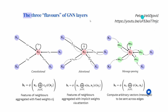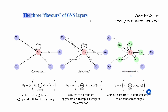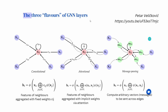Borrowing here from Petar Veličković, I show you the summary — the three flavors of our GNN layers that we have, and more or less you have three options. In the GCN, in our convolutional case, the features of our neighbors are aggregated with fixed weights — our C_ij edge weights. Attentional: the features of neighbors are aggregated with implicit weights via the attention mechanism. And message passing, which is our workhorse, where we compute arbitrary vectors — messages — to be sent across our edges. For a deep dive into this topic, there's a beautiful video by Petar Veličković, and I leave you the link to that YouTube presentation.